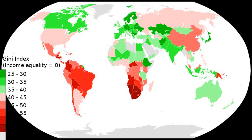External links: Global Peace Index, map of Gini data for 2007–2010. Shadow economies all over the world — new estimates for 162 countries from 1999–2007, by Friedrich Schneider, Andreas Buhn, and Claudio E. Montenegro, July 2010, World Bank. 2016 Allianz Global Wealth Report.